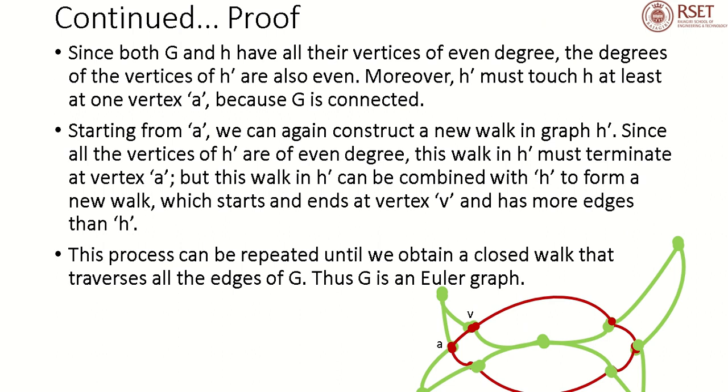See the figure. If you are starting from V through the red lines, we can come back to V through the red lines. Since both G and H have all the vertices of even degree, the degrees of the vertices of H' are also even. If we are removing the red lines like this, H' must touch H at least at one vertex A because G is connected.